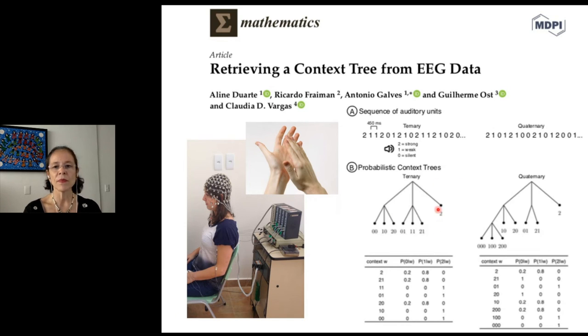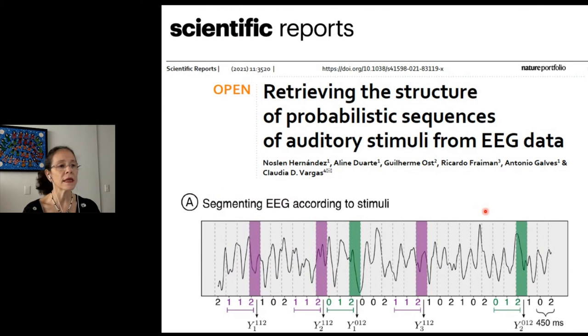Given the present symbol, the context tree represents all the possible past sequences with respect to that present unit. The transition probabilities associated to each context is used to choose the type of auditory stimulus appearing after that context in the sequence of stimuli and are depicted here for the ternary and the quaternary context tree. As Noslen Hernandez will show, we opted to segment the EEG signals as a function of the context.